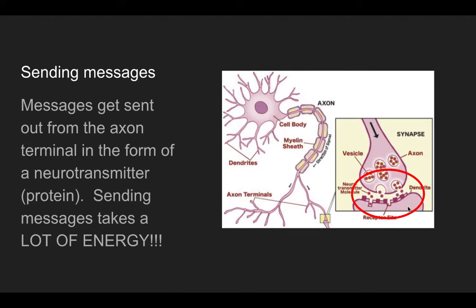Again, this sending messages takes a great deal of energy, and again, those other resources on Padlet can tell you why it takes so much energy, but this should also be an indication to you of what organelle is in great abundance in a nerve cell because it takes so much energy to send these proteins, these neurotransmitters, across to the next cell.